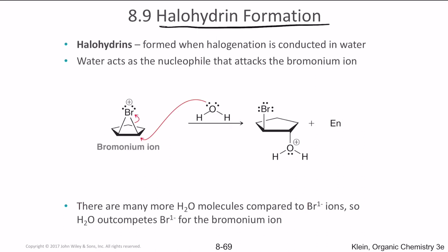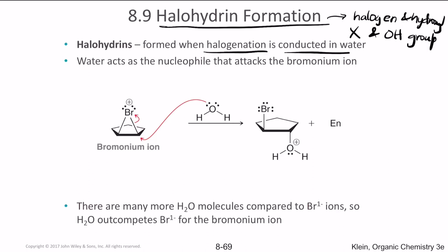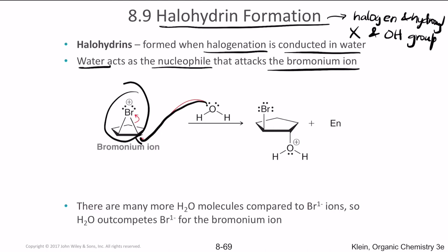Next, let's talk about halohydrin formation. A halohydrin has a halogen (X) and a hydroxyl group (OH). Halohydrins form when halogenation is conducted in water — it is the same reaction but halogenation occurs in the presence of water. Here, water acts as the nucleophile and attacks the bromonium ion. The bromonium ion still forms, but it is attacked by the water molecule, which creates an intermediate structure and then loses a proton, resulting in addition of bromine and an OH group.